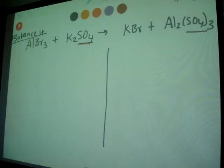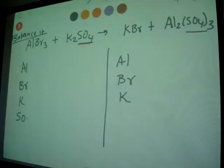So on the left side we have aluminum, right side we have aluminum, we have bromine, we have K-potassium and then we have SO4. We'll take SO4 ion as the whole quantity.